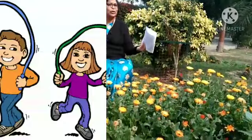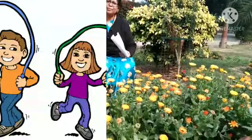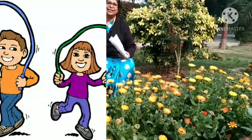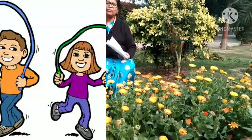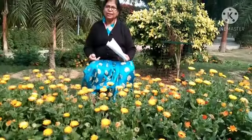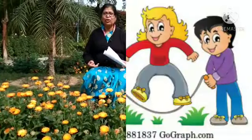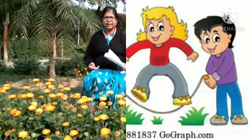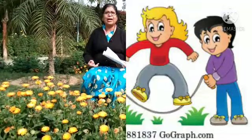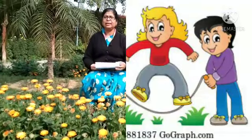Now next question: With whom do you play at home? Ghar mein toh friends nahi aapke. Toh kis ke saath khel ke haap? With your brothers and sisters. You play with your brothers and sisters, apeni bhai ya bhaiyaan ke saath khel ke. So you'll say, I play with my brothers and sisters.